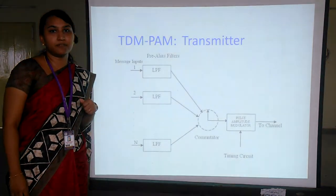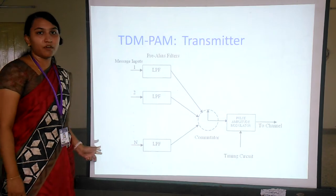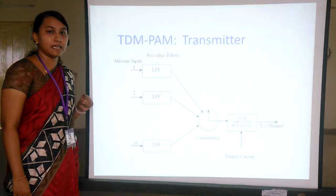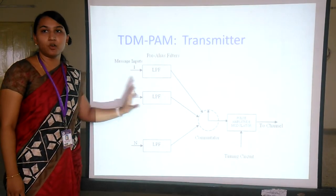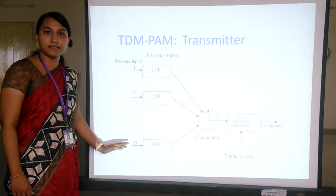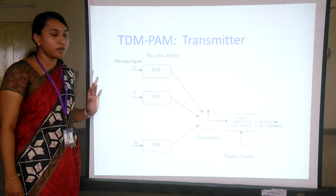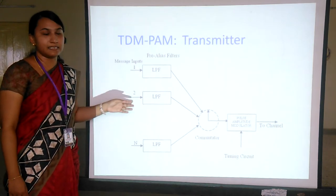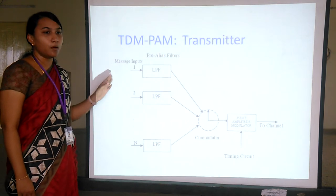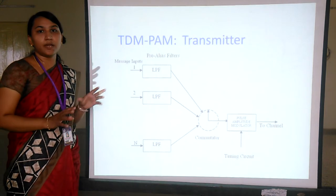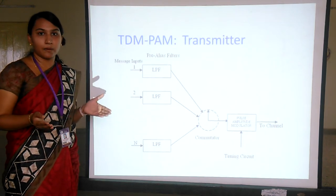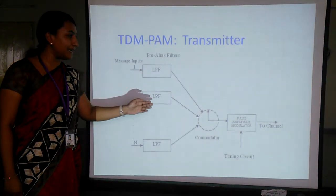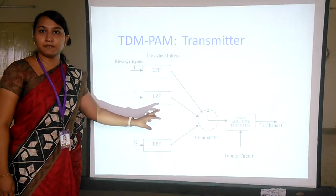Coming to the block diagram of time division multiplexing, we take n number of message inputs and first apply them to anti-aliasing filters, which are low-pass filters. We use n number of low-pass filters, called anti-aliasing filters because we limit the signal by eliminating frequencies that are not required. The output of these anti-aliasing filters is then passed into the next block — the commutator.